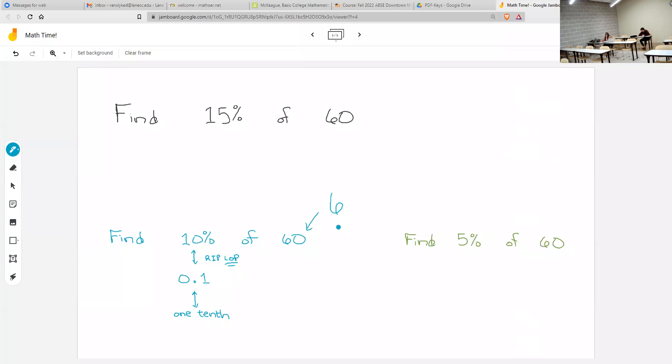And if I know what a tenth of something is—if you know what 10% of something is, 5% is half of that. If this is 10 out of 100, this is half as much, 5 out of 100. So for this one, I can then think half of 6.